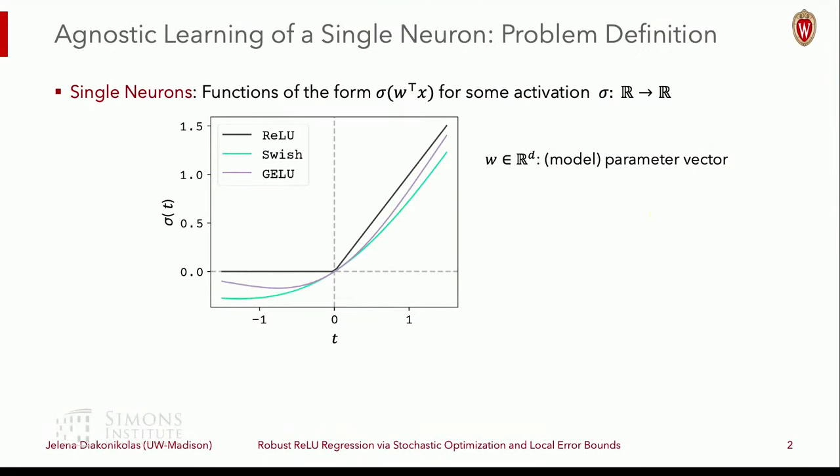So let's start with the setup. We are going to be working in the setup which is known as agnostic learning of a single neuron. And now, if you're not someone who comes with a learning theory background, probably many of these words don't make any sense. So what I'm going to do is now introduce what all of this means. Certainly, you know what linear regression would be. So here, we are not doing linear regression anymore, but nonlinear regression, where after doing a linear transformation, we have some kind of non-linearity.